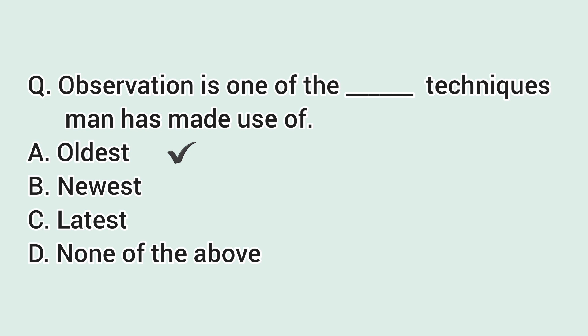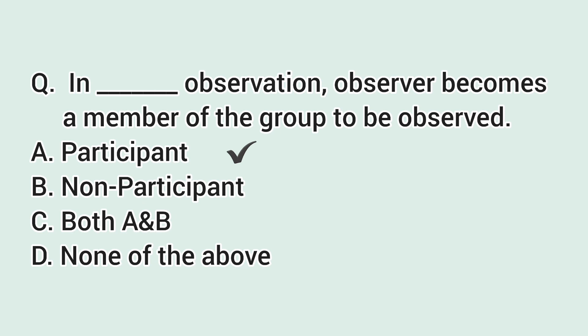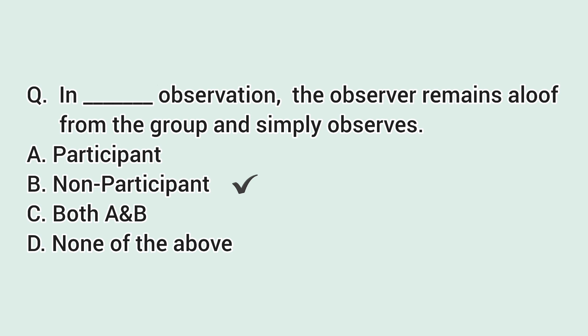Participant and non-participant are the types of observation. In participant observation, the observer becomes a member of the group to be observed.